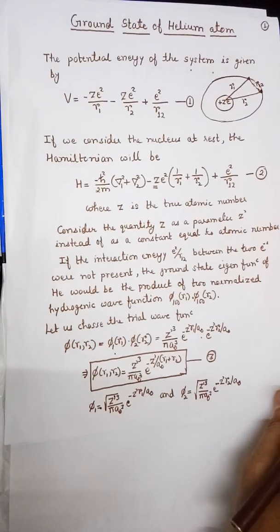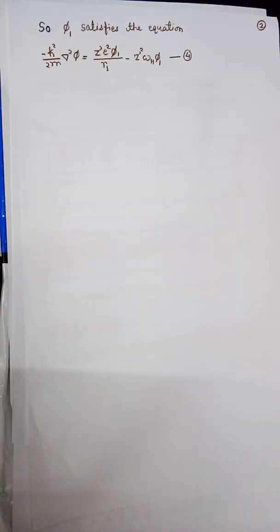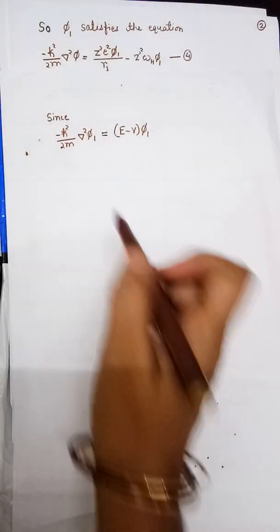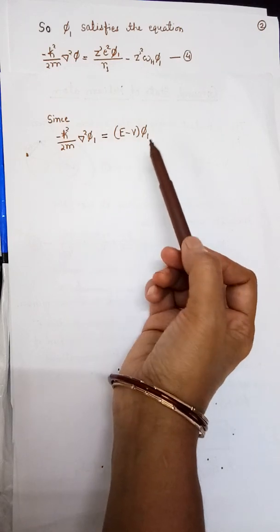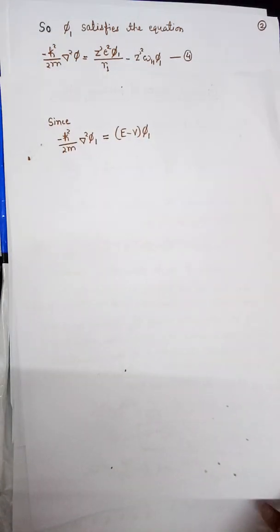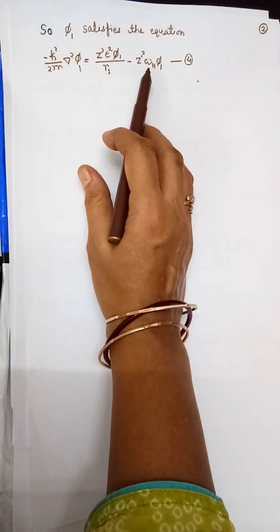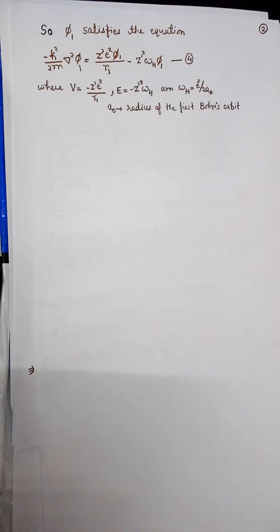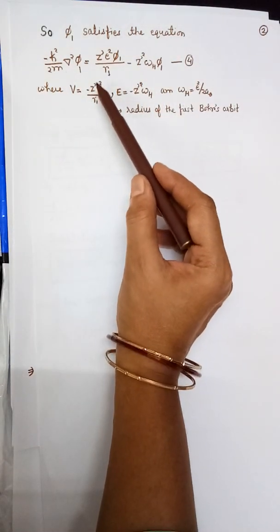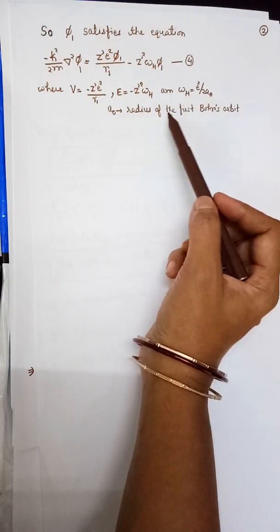The function φ₁ must satisfy the wave equation. For hydrogen-like systems, the Schrödinger equation is −(ℏ²/2m)∇²φ₁ = (E − V)φ₁. We know E = −Z′²ωₕ and V = −Z′e²/r₁, where ωₕ = e²/2a₀. So we can write: −(ℏ²/2m)∇²φ₁ = (Z′e²/r₁ − Z′²ωₕ)φ₁.